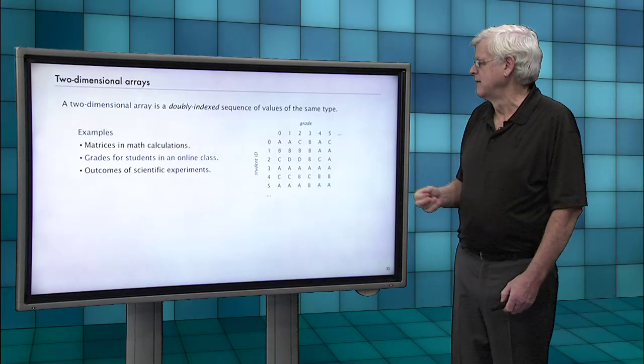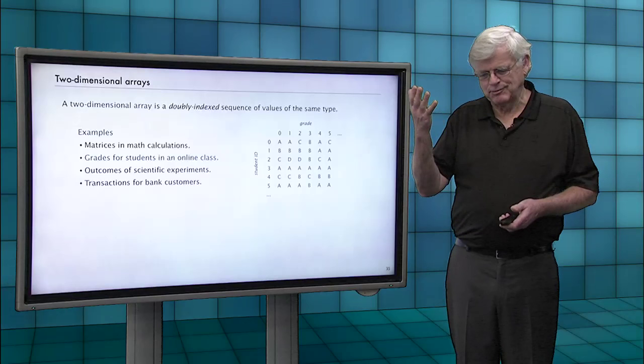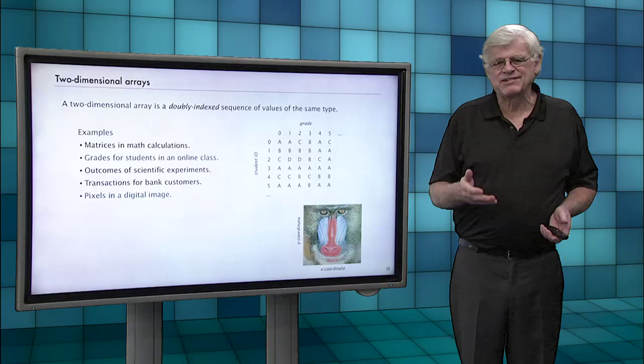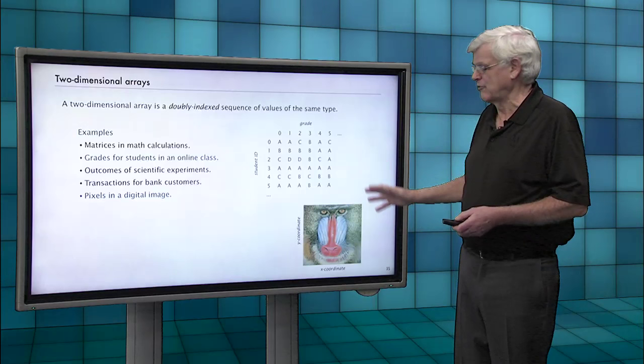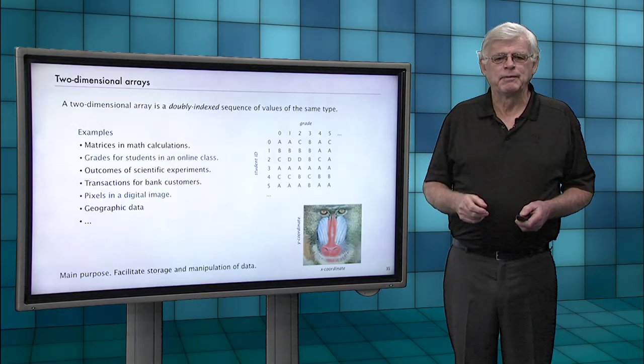Scientific experiments might be indexed by time and by experiment. Transactions for bank customers, there's the customer and then which transaction it is. We'll look at this one later on, pixels in a digital image. This image has got an X coordinate and a Y coordinate which are just indices, and then each value of the coordinates specifies a pixel and the thing there is a color or geographic data. There's many, many applications.